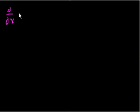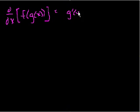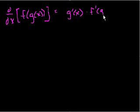Let's take a review of what the chain rule told us. If I wanted to take the derivative of f of g of x, the chain rule says that the derivative of this composite function is just the derivative of the inside function, g prime of x, times the derivative of the outer — the parent function — but still having g of x in it: times f prime of g of x.